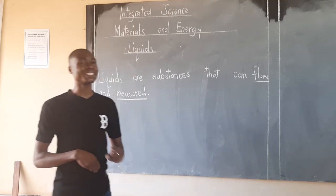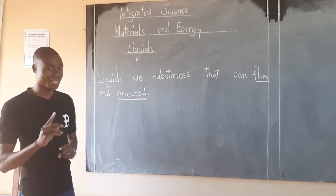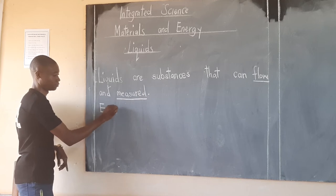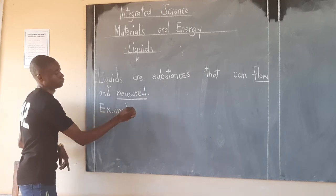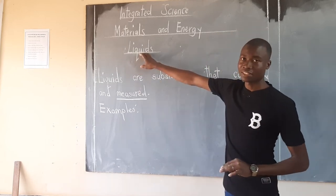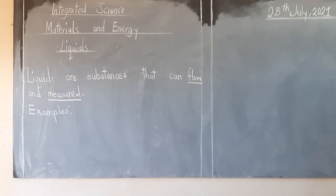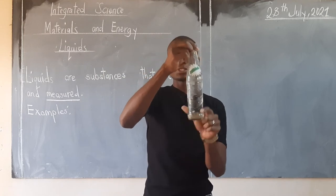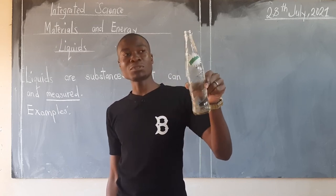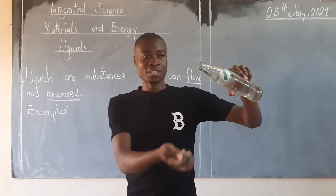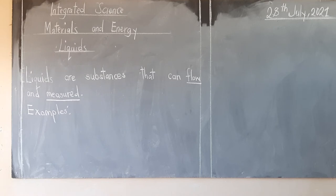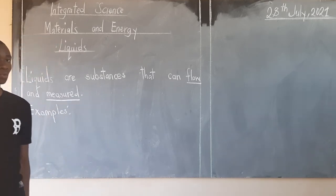Now I would love us to look at some of the examples of all these liquids. What are some of the liquids that you know out there? Here with me is a bottle. In this bottle there is something — looking at it, we can be able to name it. What is in that bottle? It says water. Water is one of the examples of liquids. Let's try to work with water. So we have water as an example.